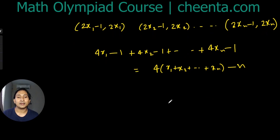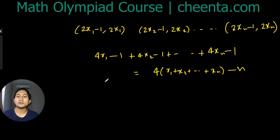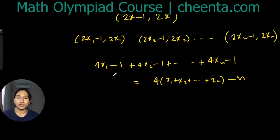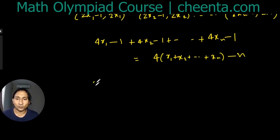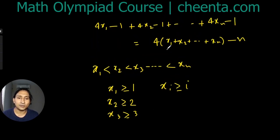Now we can assume an ordering between these xᵢ's. So x₁ is clearly greater than or equal to 1 because that's the first page. We can assume the ordering x₁ < x₂ < x₃ ... < xₙ. If x₁ ≥ 1, then x₂ ≥ 2, x₃ ≥ 3. In general, xᵢ ≥ i.